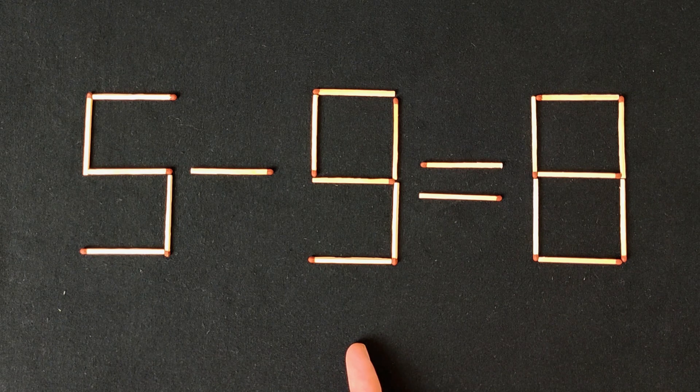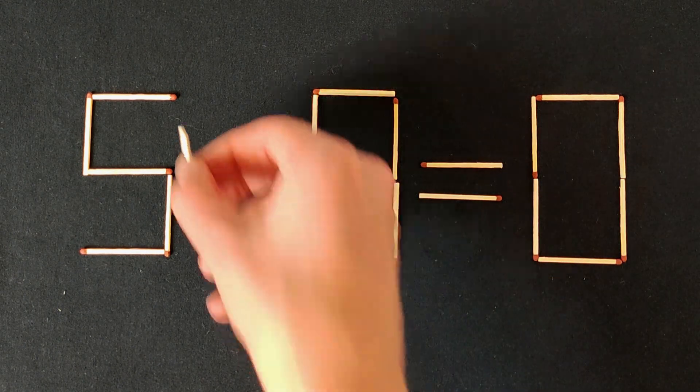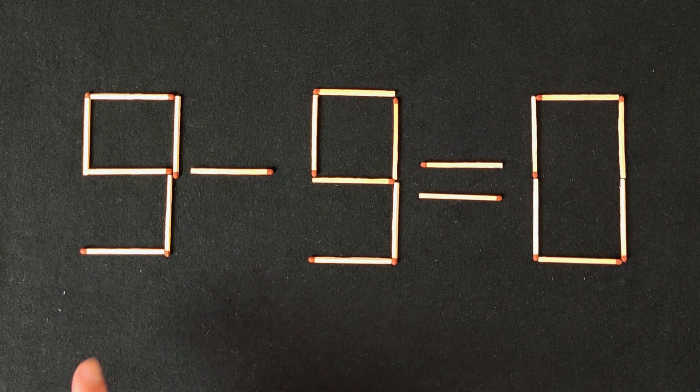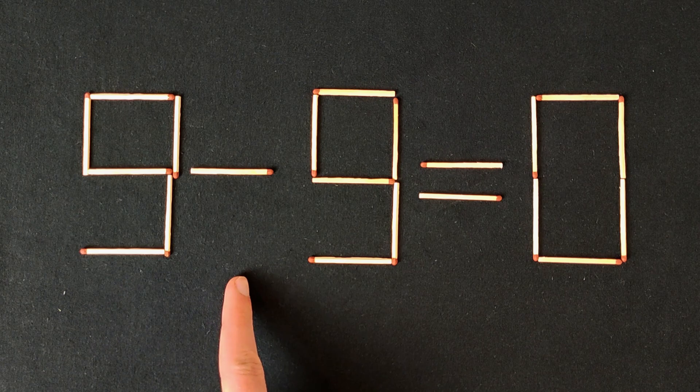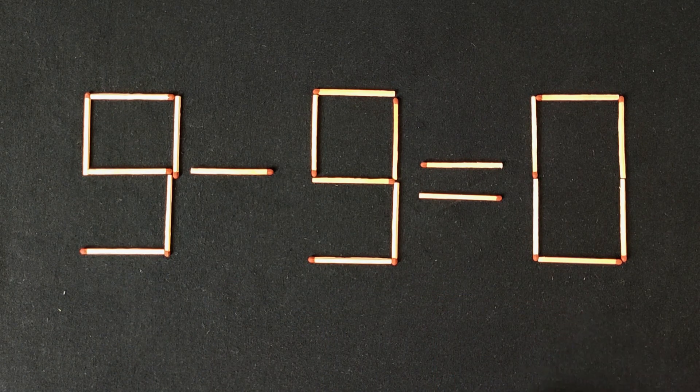And right now I'll show you how it's solved. We need to move this match. Yes. We need to move it here. And now 9 minus 9 equals 0. That's correct.